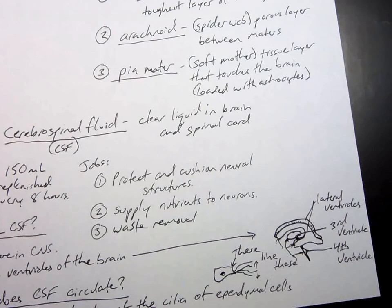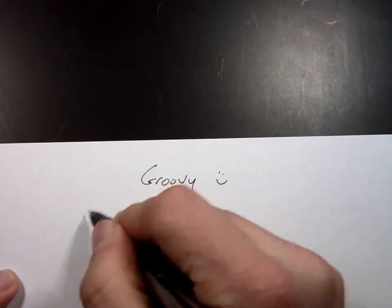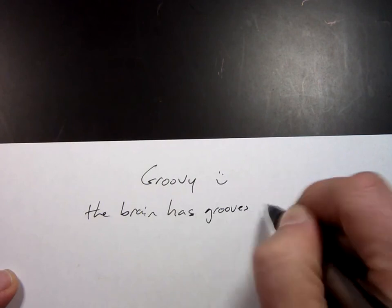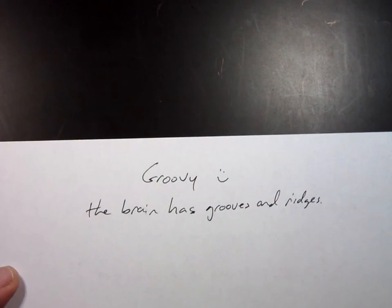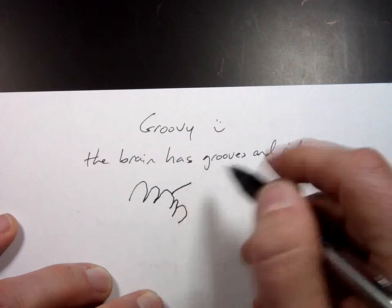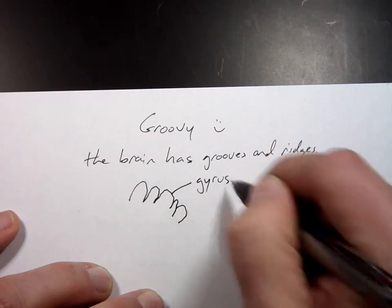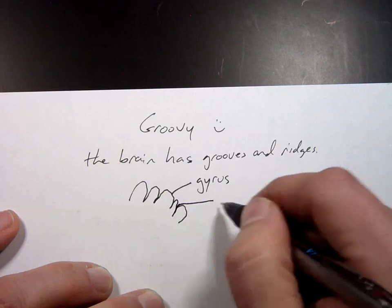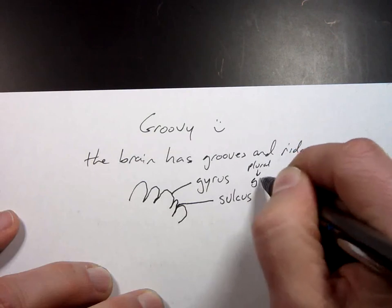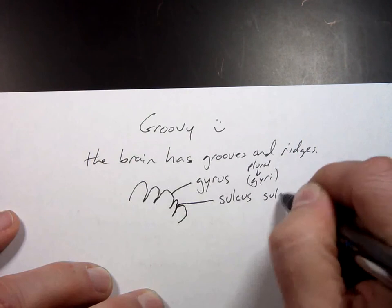We're going to talk about the grooves in the brain and then we'll call it a day. Groovy. The brain has grooves and ridges. These raised portions individually are gyrus, sunk down portions here called sulcus. The plural is called gyri and sulci. That's the plural.